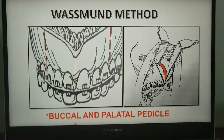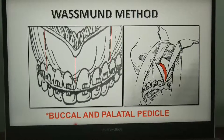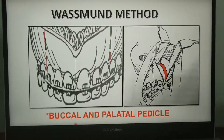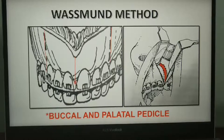The second anterior maxillary osteotomy technique is the Wassmann method, which preserves both the buccal and palatal soft tissue pedicles — unlike the Wunderer method where only the buccal pedicle is preserved. It is however more difficult to gain access to the palatal aspect of the anterior maxilla with this incision design. There are three incisions, all vertical and placed on the buccal aspect. Two vertical incisions are made at the extraction site of the first premolars, and a third midline incision is given to gain access towards the anterior nasal spine.